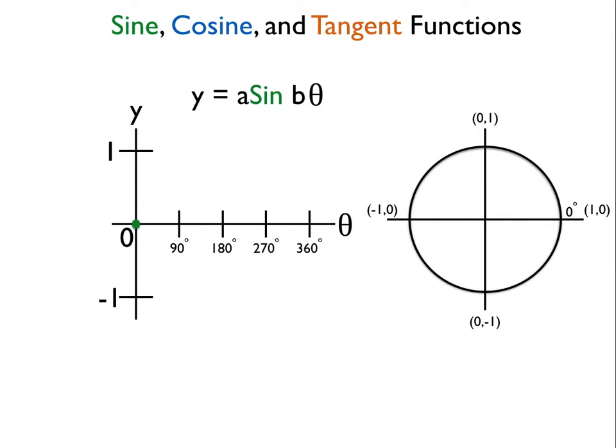This is the parent function and let's just assume that a is 1 and b is 1. So that means that our amplitude is 1 and our cycle, our period, is a full 360. If you look at how it relates, how we graph this on a coordinate plane and how it relates to the unit circle, you remember that the unit circle has a maximum and minimum of 1 on the x-axis and on the y-axis.